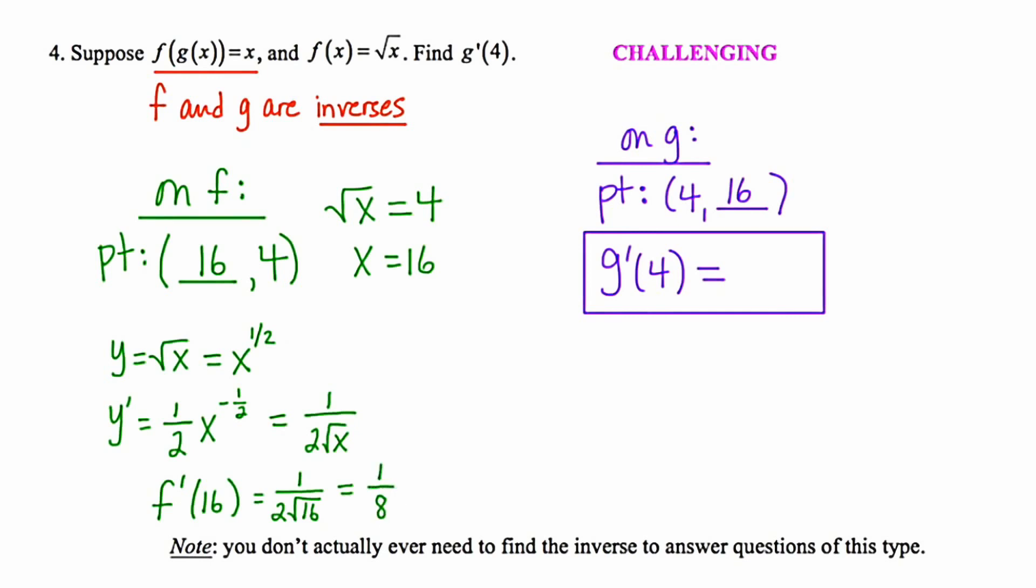Now if the slope of the line tangent to the graph of f at the point (16, 4) is 1/8, that would mean the slope of the line tangent to the graph of g at the corresponding inverse point (4, 16) will be its reciprocal, which will be 8. So the answer to this question is 8.